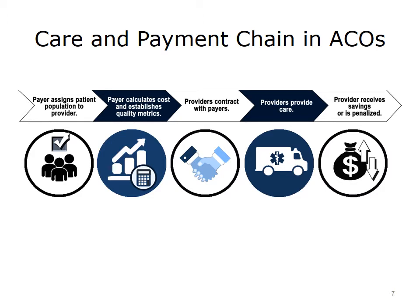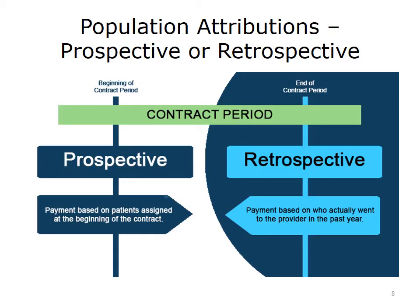Calculating the future cost of providing care is done through analysis of the age, gender, disease history, and prior cost of care for the patient population, plus an expected increase due to inflation. Depending on the contract, there are two methods for assigning or attributing populations — prospective or retrospective. This process is called attribution or assignment. A key feature of CMS ACOs is that the ACO is responsible for all cost of care, whether or not the patient received care from the ACO.